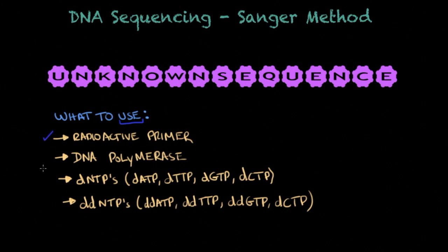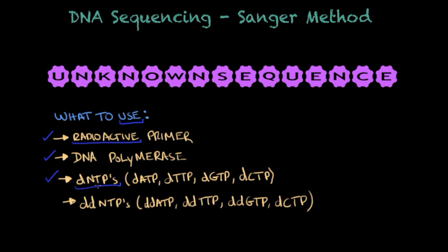The first thing is a radioactive primer. You need it to be radioactive so you can later observe the fragments under autoradiography. The second thing is a DNA polymerase, an enzyme that will allow DNA replication. The third is the DNA nucleotides, or building blocks, found in the form of dNTPs or deoxyribonucleotide triphosphates, with the bases adenine, thymine, guanine, and cytosine.